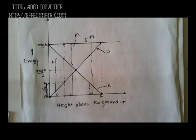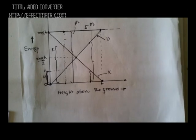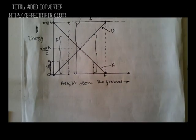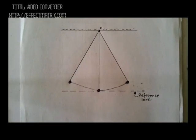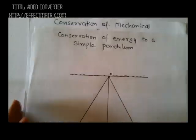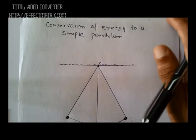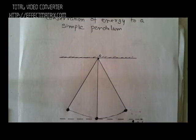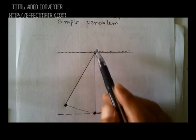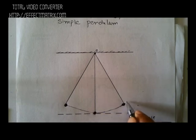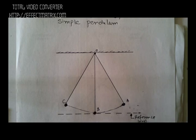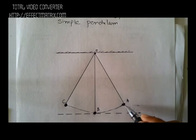This graph nicely explains how the total of kinetic and potential energy remains constant. Before we wind up, we will look at one more example of conservation of mechanical energy — the simple pendulum. We have a pendulum suspended from point O, with two extreme positions A and C, and mean position B.